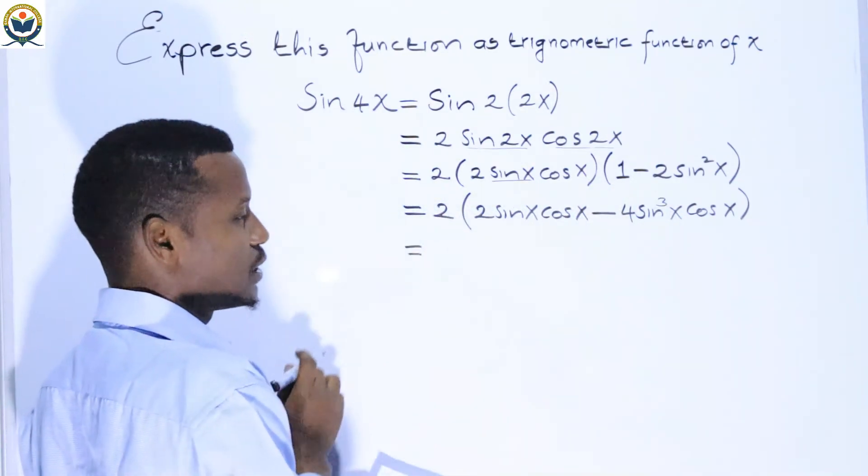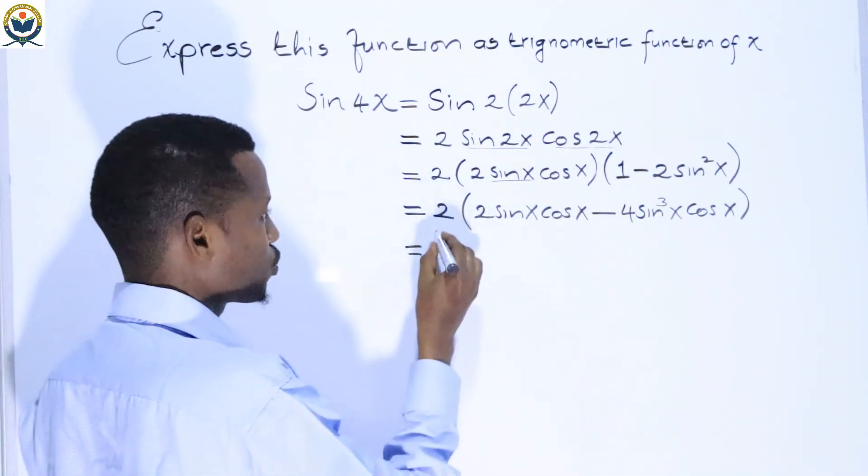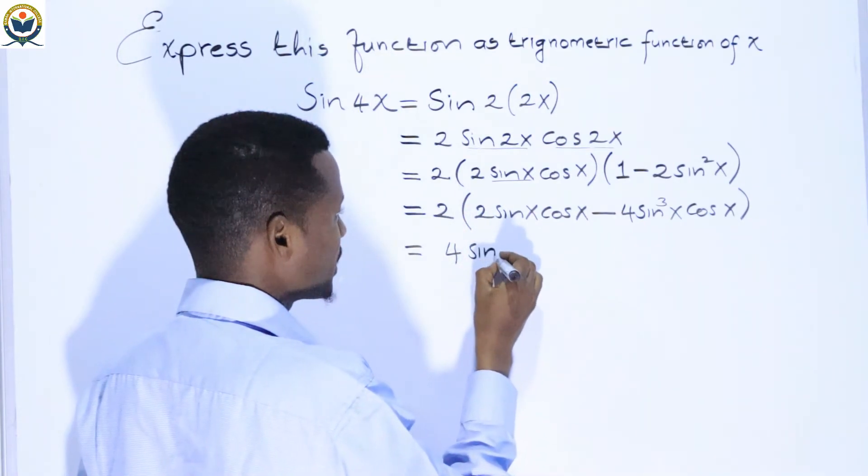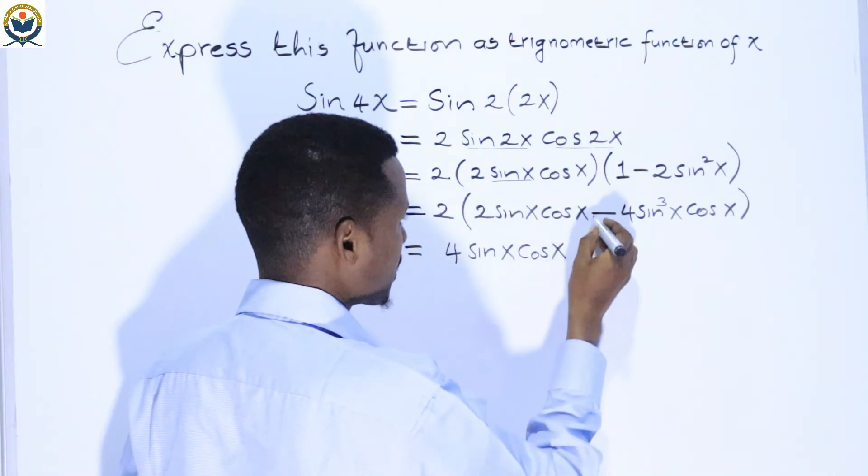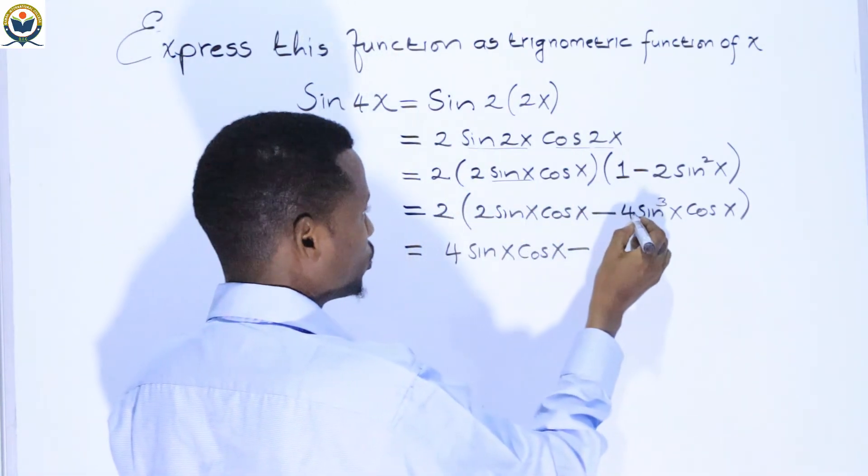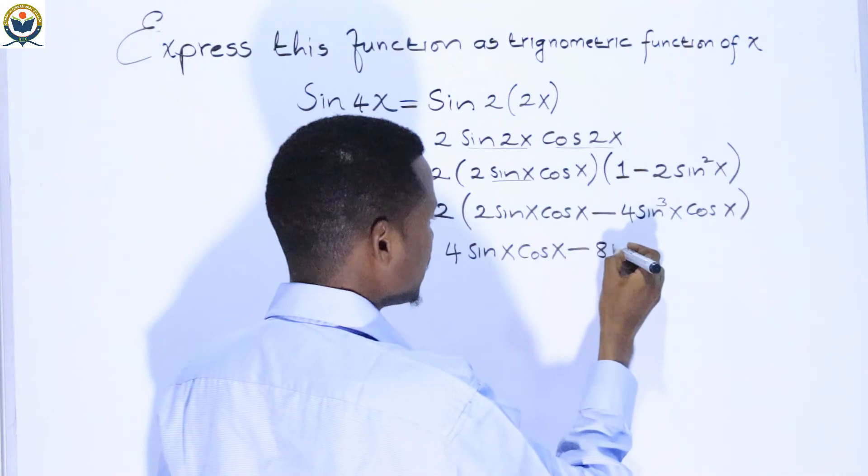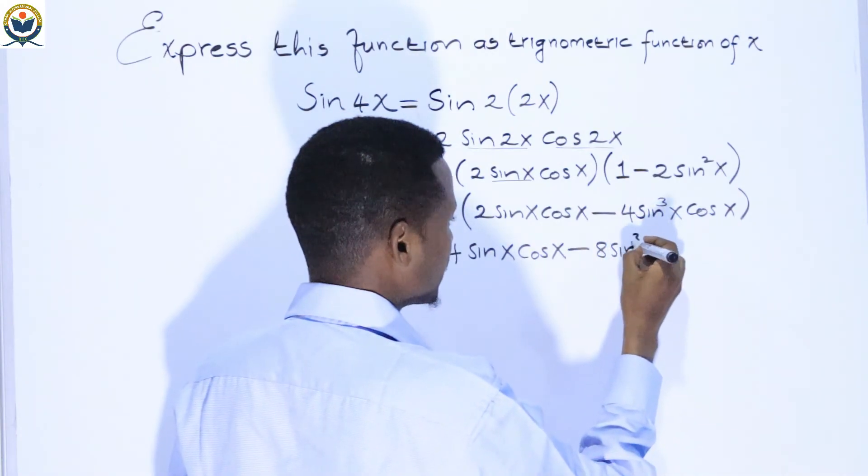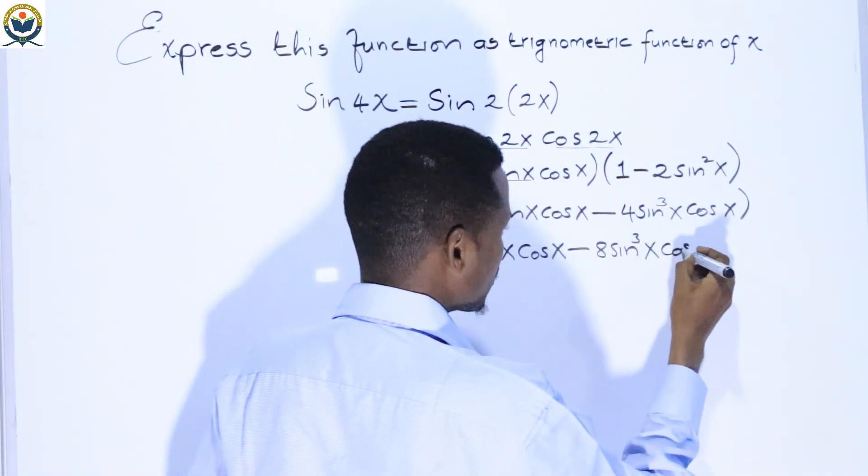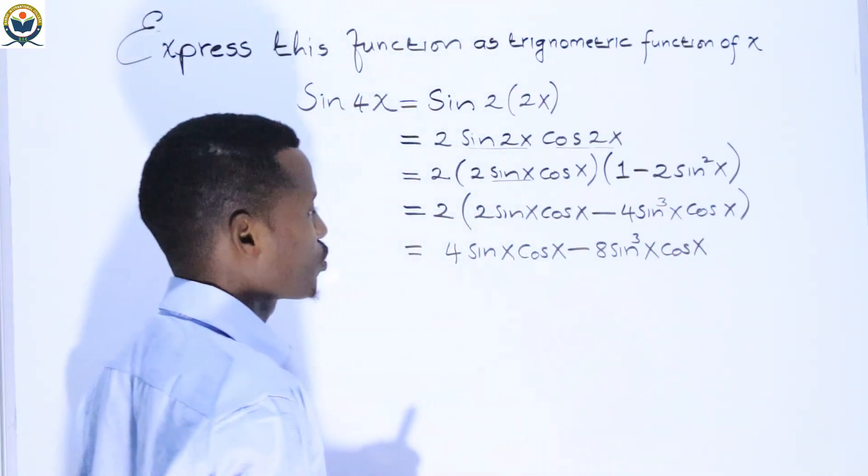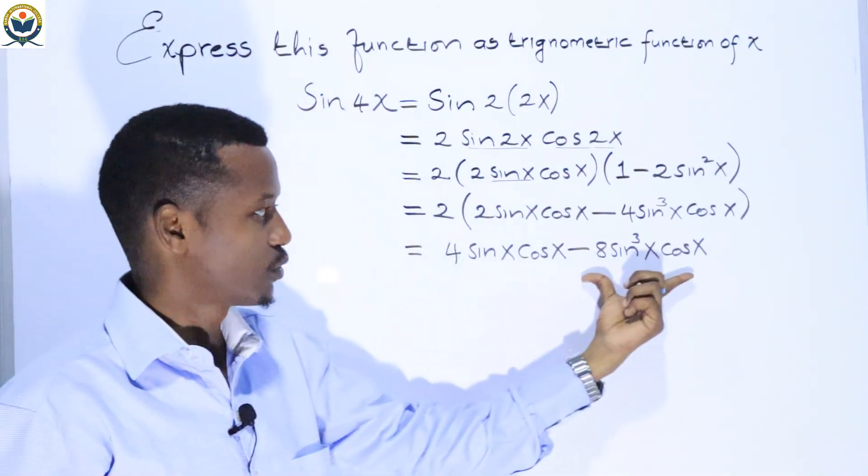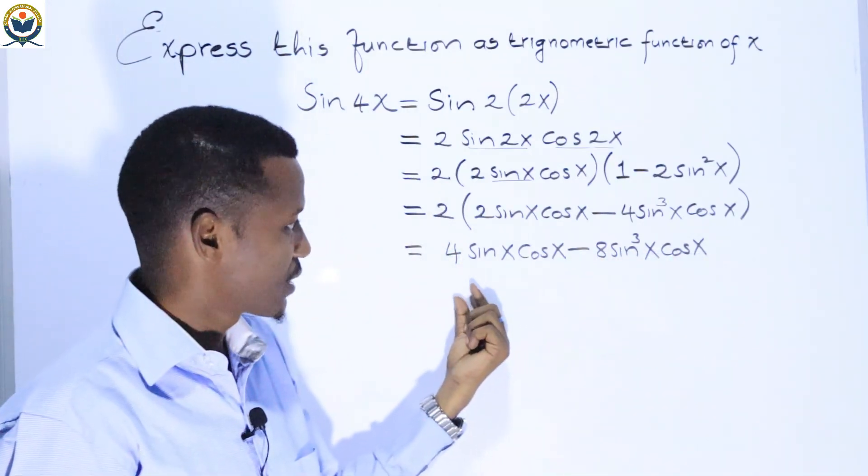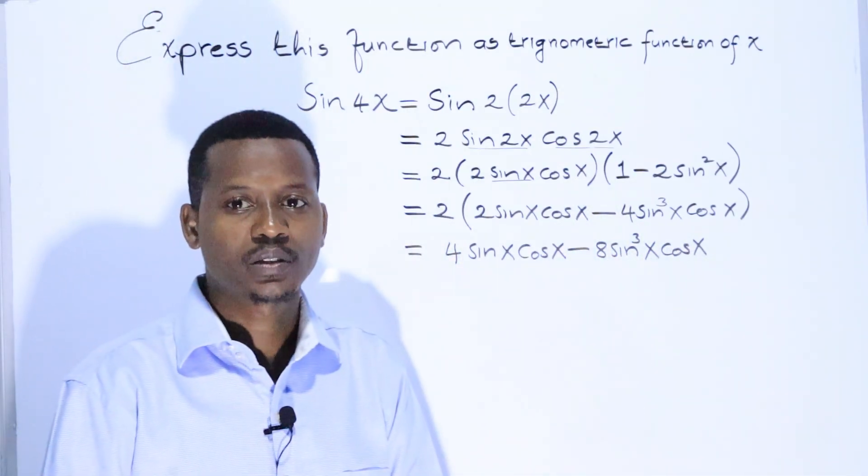Opening the bracket: 2 times 2 equals 4 sin(x) cos(x), minus 2 times 4 equals 8 sin³(x) cos(x). This is the final answer for sin(4x) expressed as trigonometric functions of x.